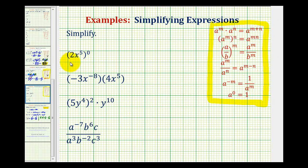Looking at our first example, we have two x to the fifth raised to the zero power. Well, this one should be pretty straightforward. Looking at our exponent rules, a to the zero is equal to one, so anything raised to the zero power is always equal to one.